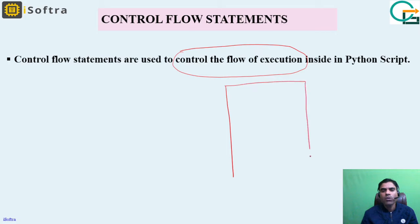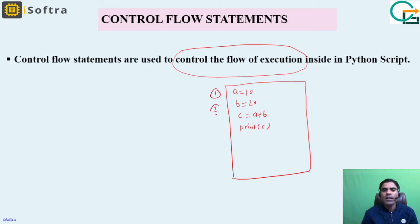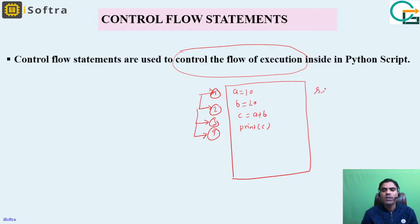Suppose this is our code editor window in Python. We have written a Python script: A equals 10, B equals 20, then C equals A plus B, and finally print the value of C. This is line one, line two, line three, and line four. Here the flow of execution is line by line — control goes to the first line, then the second, then the third, then the fourth. This type of execution is called sequential control flow.